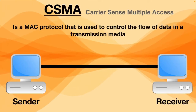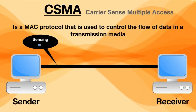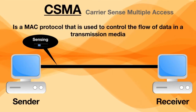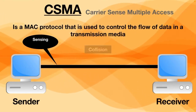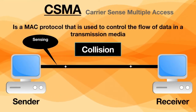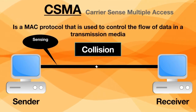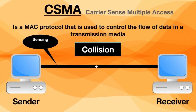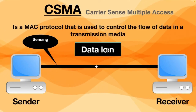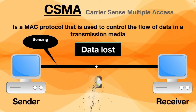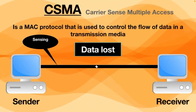CSMA works by sensing the state of the medium in order to prevent or recover from a collision. A collision happens when two devices transmit data at the same time on a shared medium — the data gets scrambled and the receiver doesn't get any information from the sender, causing the information to get lost.